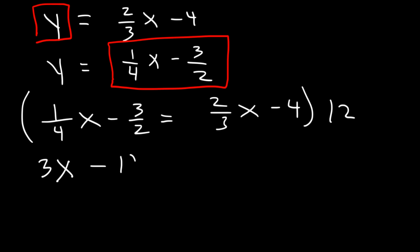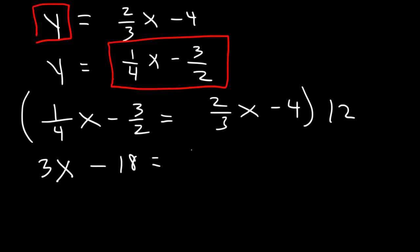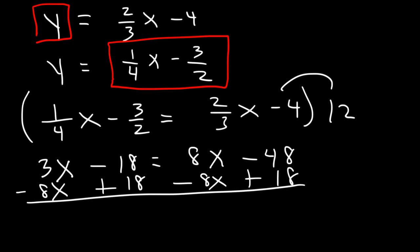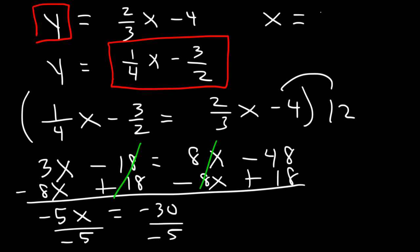So what we have here is negative 18. 2 3rds times 12: 12 divided by 3 is 4, and 4 times 2 is 8, so 2 3rds of 12 is 8. And 12 times 4 is 48. So now let's add 18 to both sides and simultaneously subtract 8x from both sides. These will cancel. 3x minus 8x is negative 5x. Negative 48 plus 18 is negative 30. So if we divide both sides by negative 5, x is equal to positive 6.